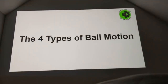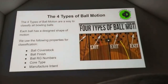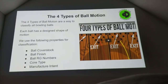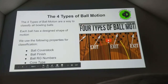Let's get right into it with the four types of ball motion. Most of you kind of know what these are, but basically the four types of ball motion are a way to classify all bowling balls. There are a little more than 150 bowling balls made just this year alone, and it makes it very hard to know what type of ball motion you're going to get. So we essentially took all the information from the manufacturer — cover stock, finish, RG, core type, and the manufacturer's intent — and boiled that down into four shapes.